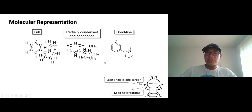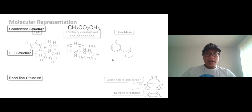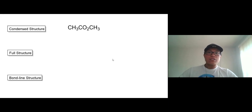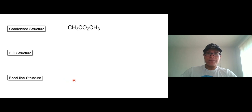But it could be confusing if you don't know how many carbons or hydrogens are there, if you can't read it. Well, we don't have any other way — you're going to have to be familiar with it. Let's try this together. At the top, this is a condensed structure. I will ask you to convert that to a full structure and then convert that to a bond line structure.